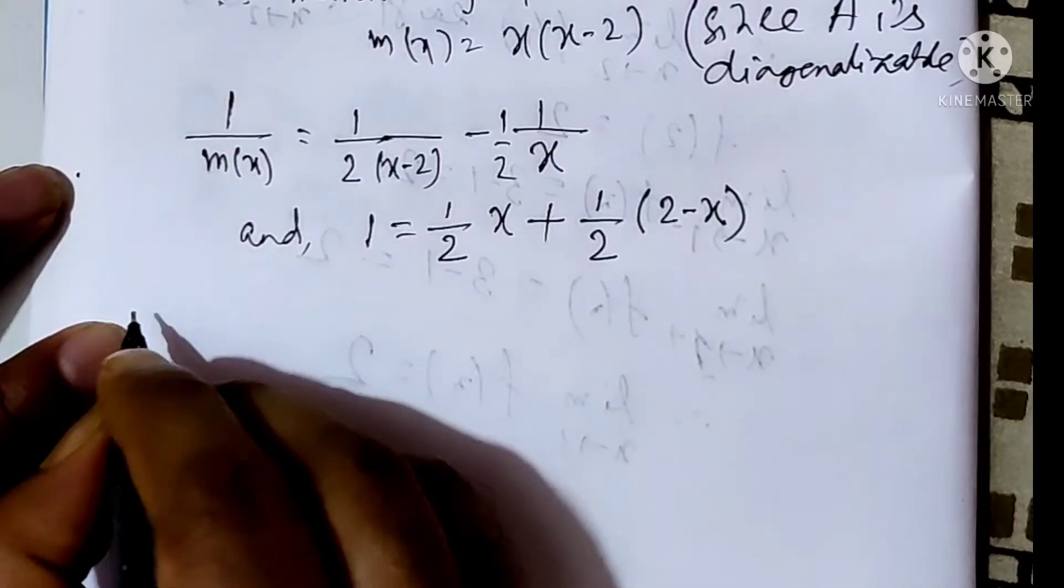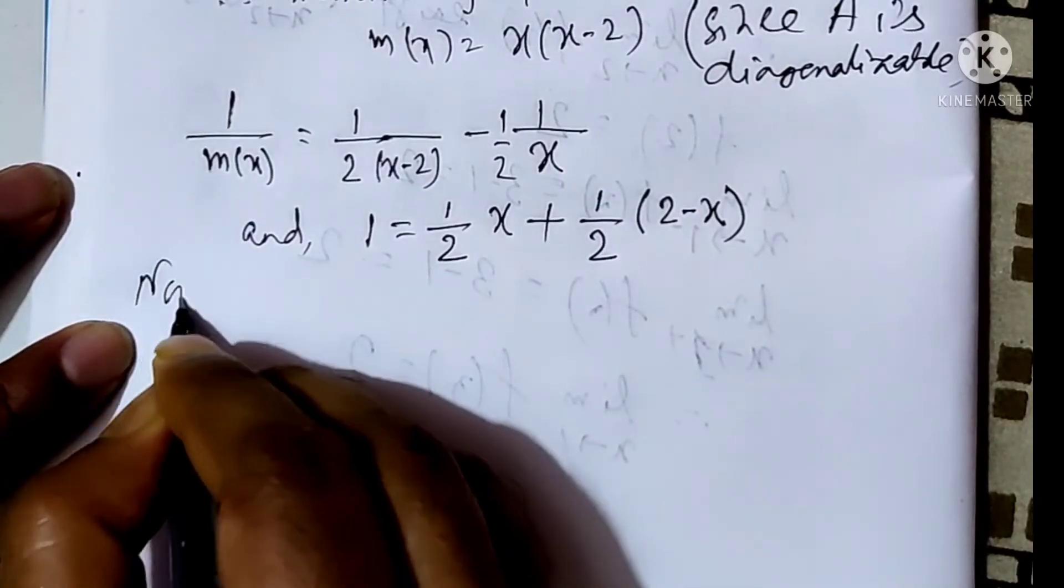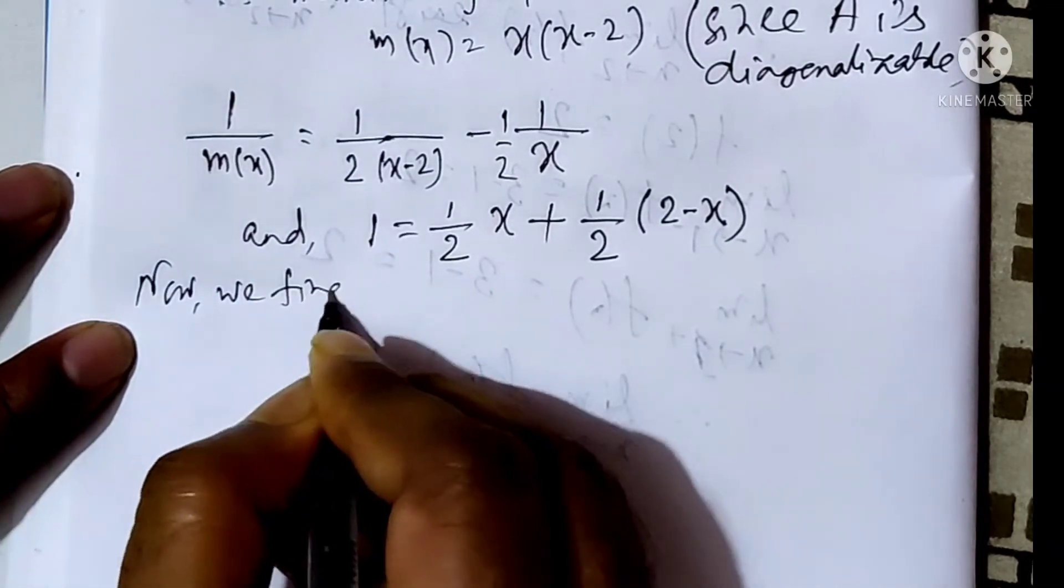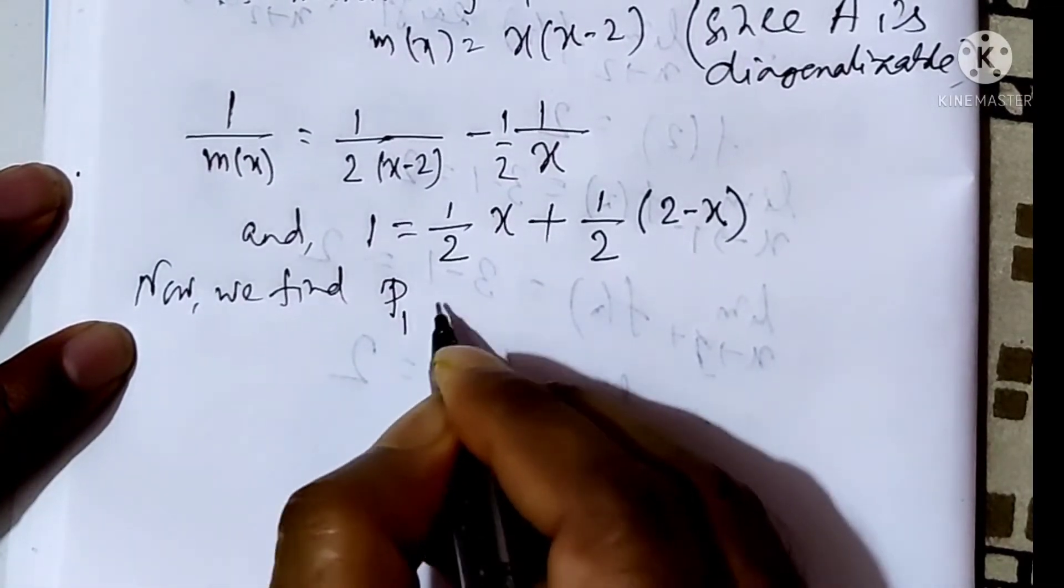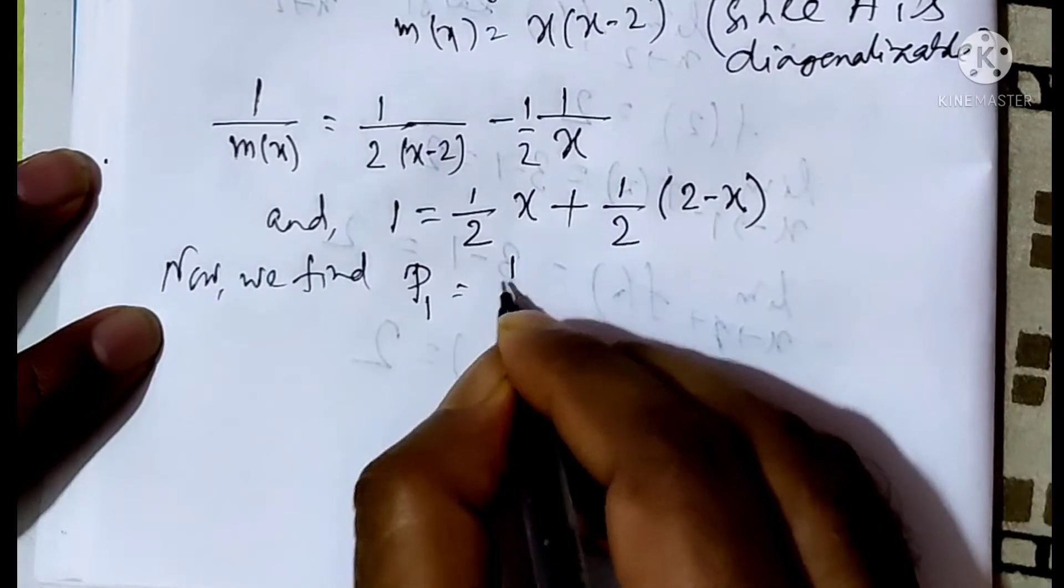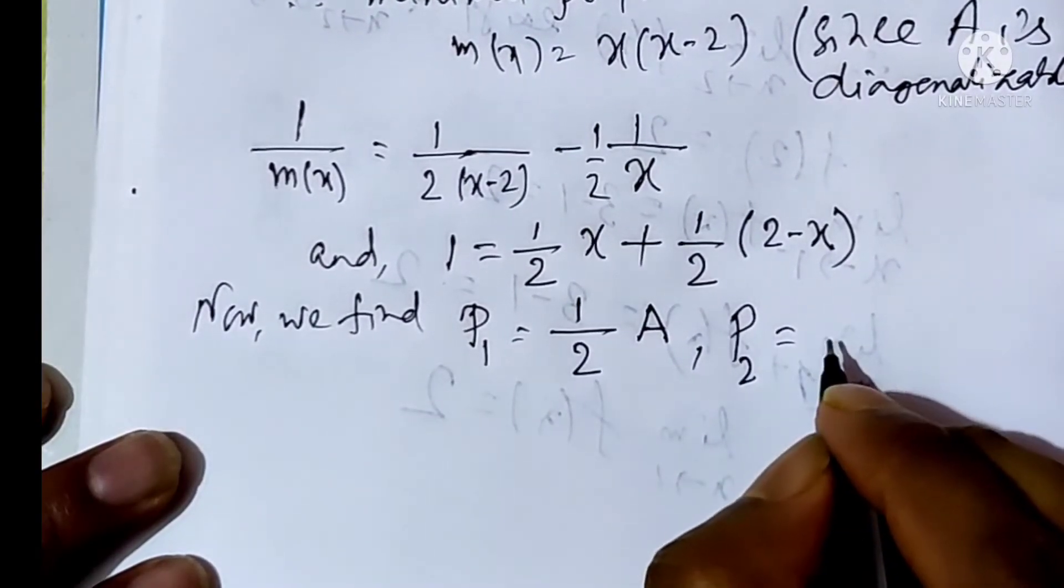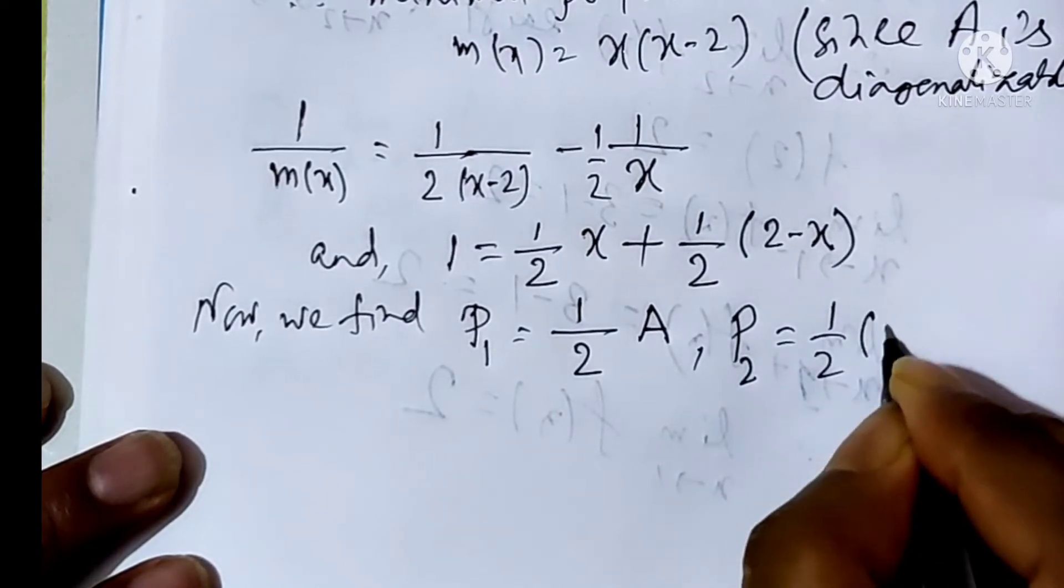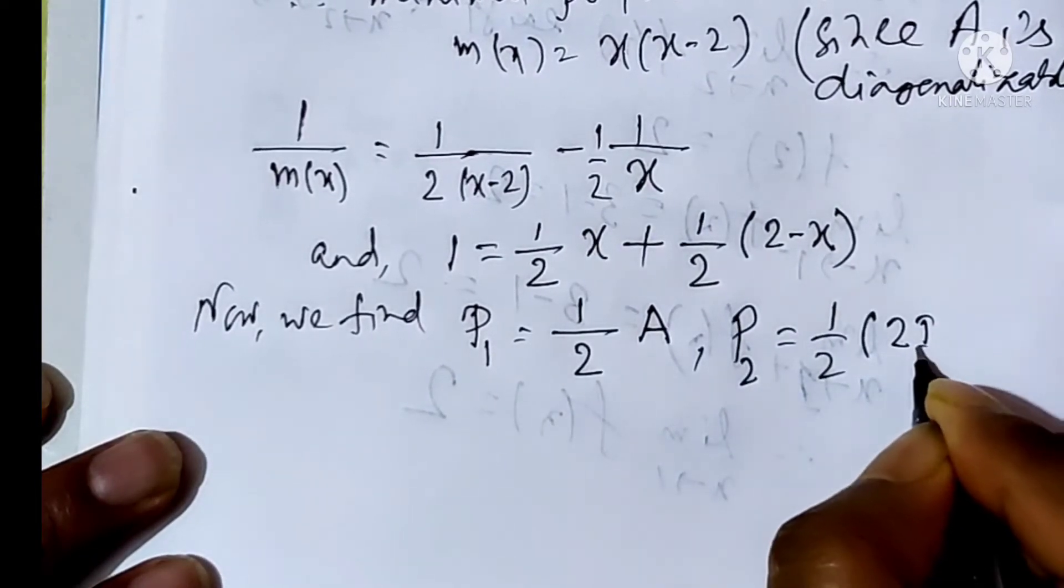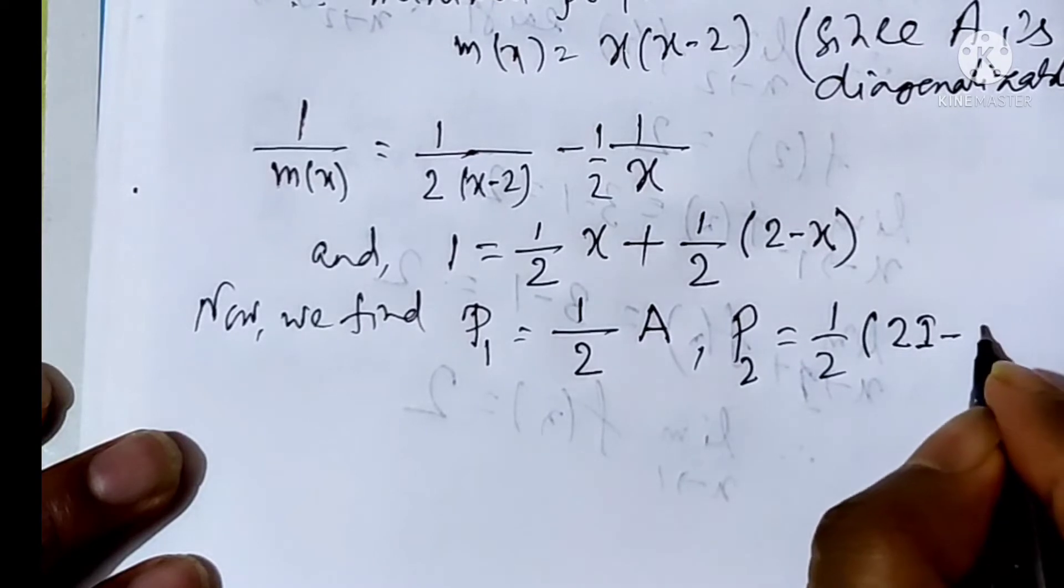Now, we find P1 equals A/2, and P2 equals 1/2 times (2I minus A).